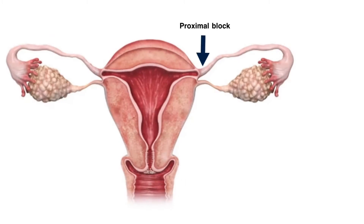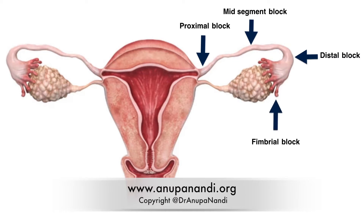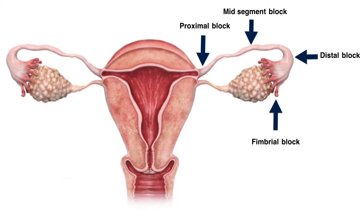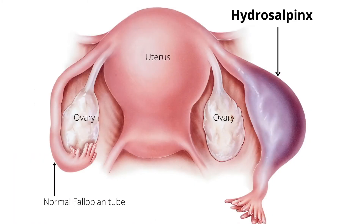If the part of the tube close to the uterus is blocked, it is called proximal block. Sometimes the block is in the middle of the tube. If the block is in the part away from the uterus, it is called distal block. Sometimes the finger-like projections at the end of the tube can get damaged, called fimbrial block. If the tube gets swollen due to collected secretions, it is called hydrosalpinx.